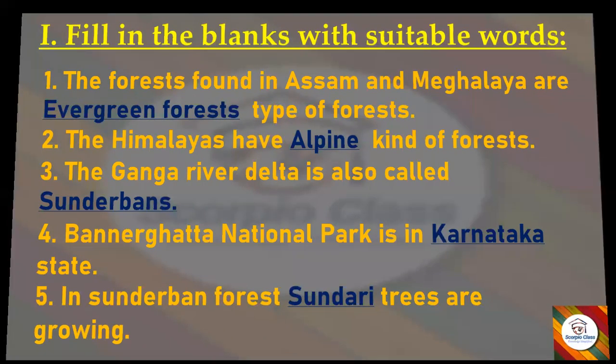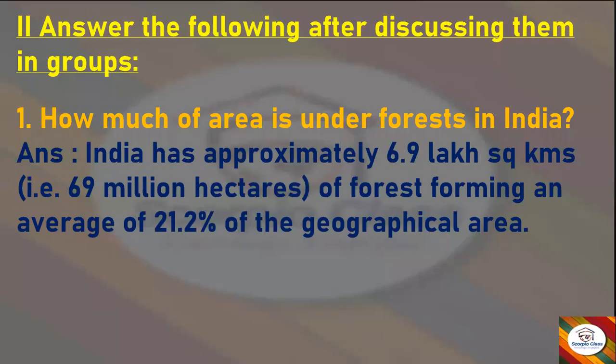Now let's move to the second main — Answer the Following. First question: how much area is under forests in India? Answer: India has approximately 6.9 lakh square kilometers, that is 69 million hectares of forest, forming an average of 21.2 percent of the geographical area.